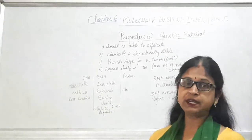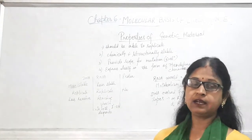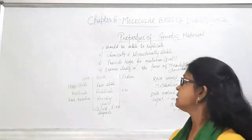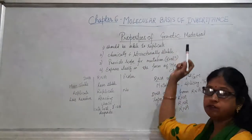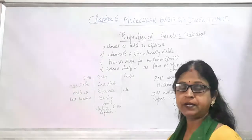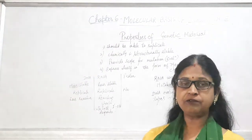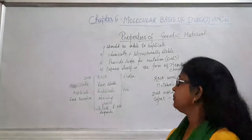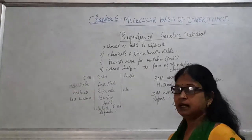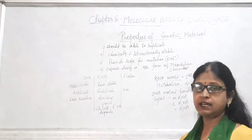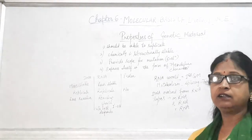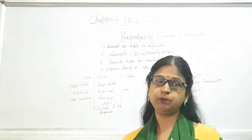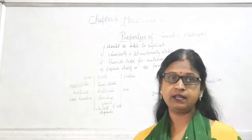Hello students. We will study here why DNA is the genetic material — what properties should be there in genetic material. There are three things inside the cell: RNA, DNA, and protein, and so many experiments were done to give proof that DNA is the genetic material.